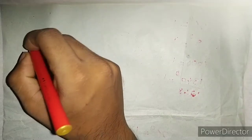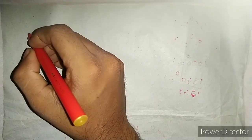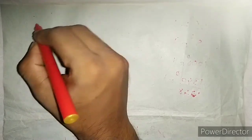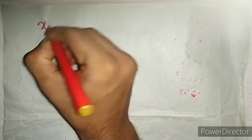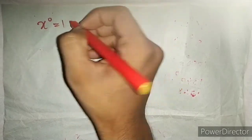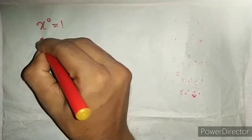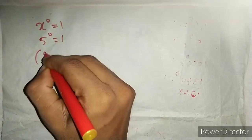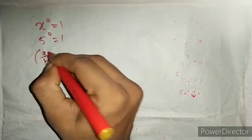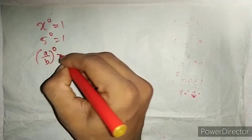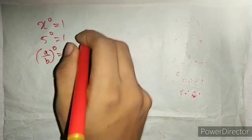In this case, the number raised to 0 is equal to 1. In this case, x raised to 0 is 1. 5 raised to 0 is 1. In this case, a divided by b, raised to 0, is 1.